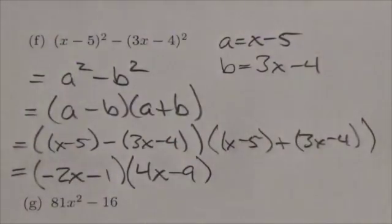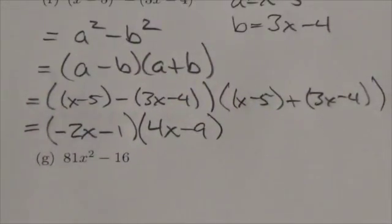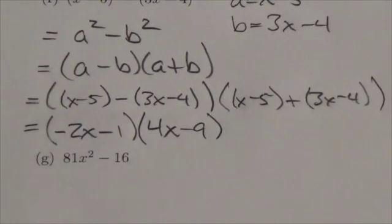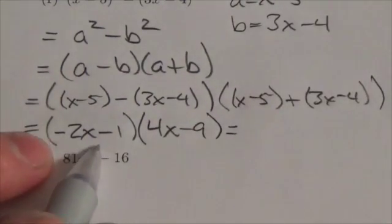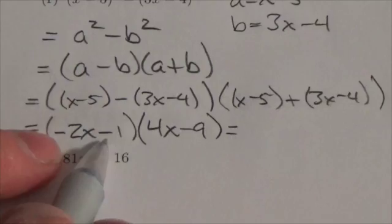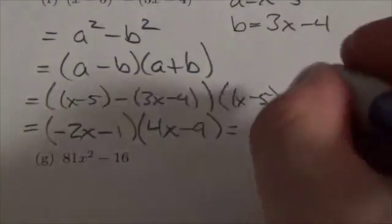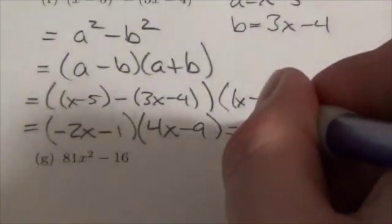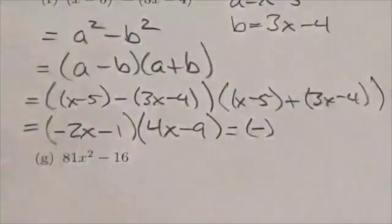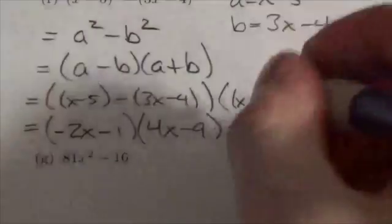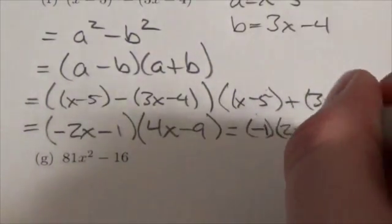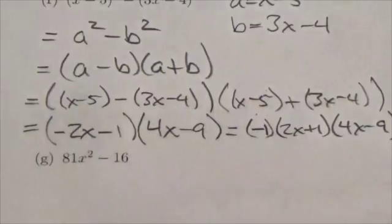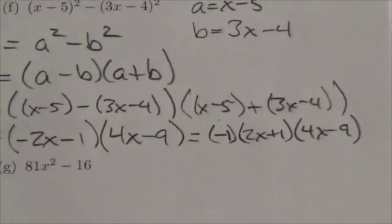And there we go, that's the answer in factored form. Now you may see, if this was for example in a multiple choice question here, you may see them go one step further. Because if you look in that first binomial factor, there's a common negative to both of those. So you might see them do this: take the negative out—actually, I don't know, well I'll put a negative one there—a negative one and make that 2x plus 1 times 4x minus 9. You may see them go and just take it that one step further.